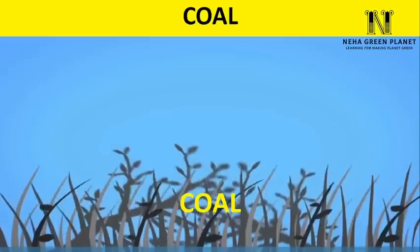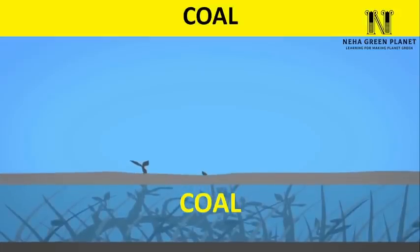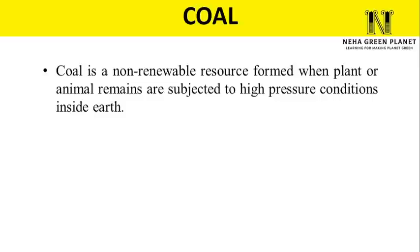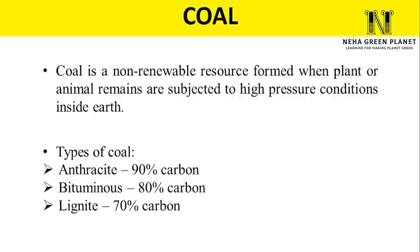Coal is the main non-renewable energy resource widely used in thermal power plants to generate electricity. Coal is formed when plant and animal remains get buried inside the earth and are subjected to high pressure and temperature conditions — a process that takes millions of years. There are different types of coal depending on carbon content: anthracite has around 90% carbon, bituminous has 80%, lignite has 70%, and peat has 60%.